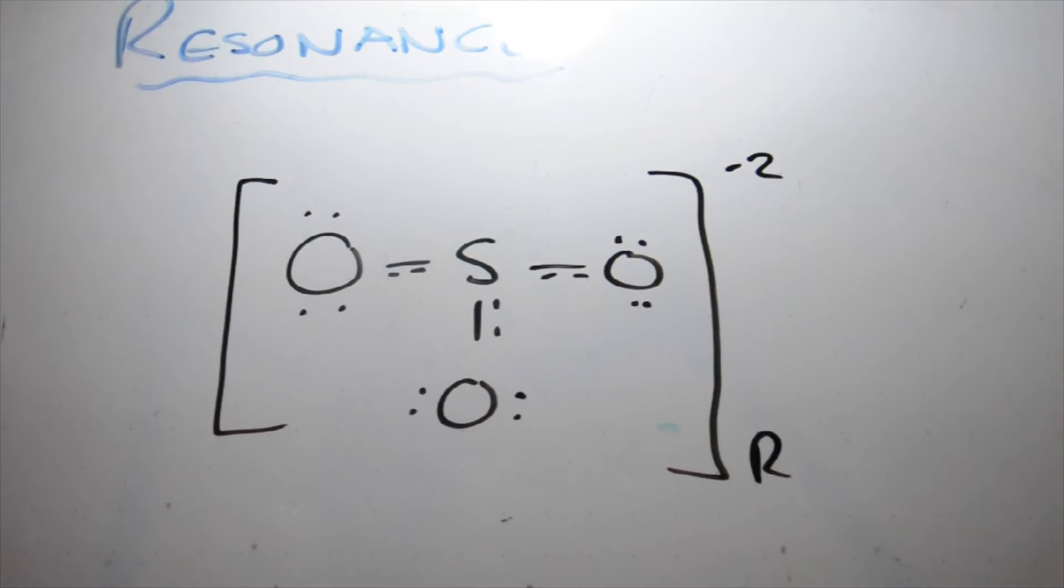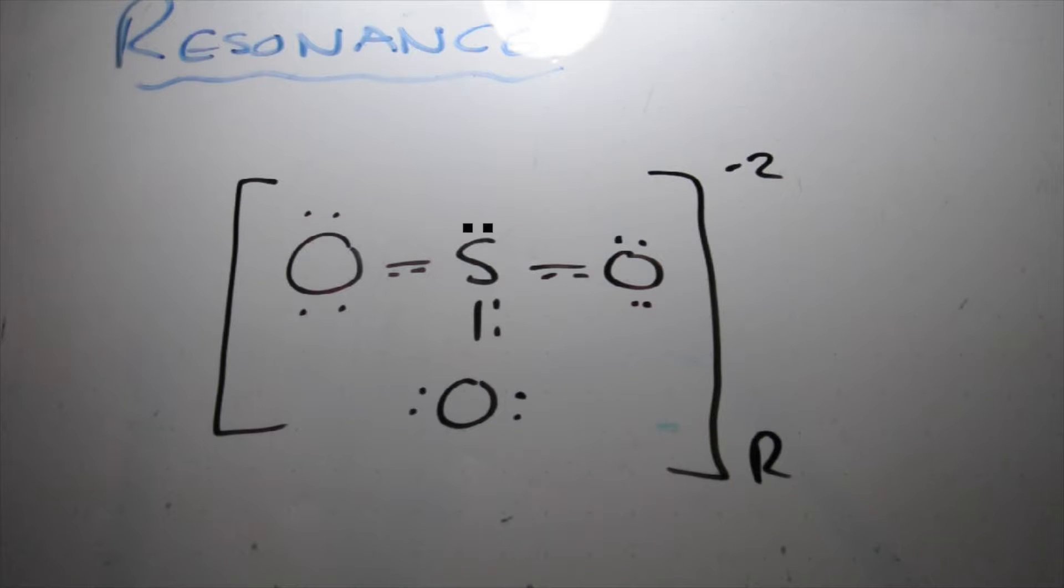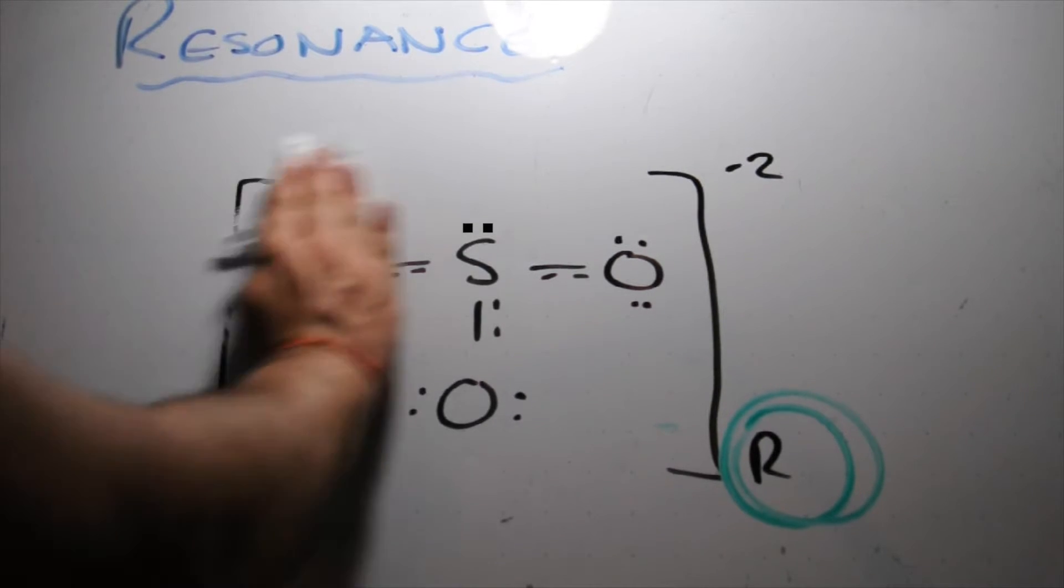The reason why we draw resonance structures is because we don't actually know which oxygen the double bond is on. After conducting experiments, scientists have found that all three oxygen bonds are the exact same. However, the bond length is longer than a double bond and shorter than a single bond, which means the double bond is distributed. So let's see how we draw resonance structure for SO3 2-. You would put a bracket around SO3. You would draw the distributed double bond in dotted lines. And then at the bottom, under the 2 minus charge, you would write R for resonance.